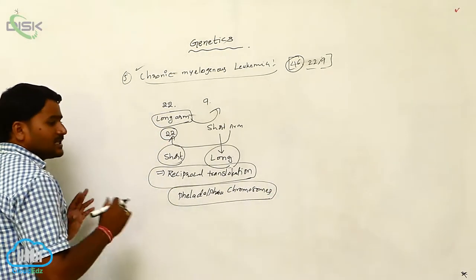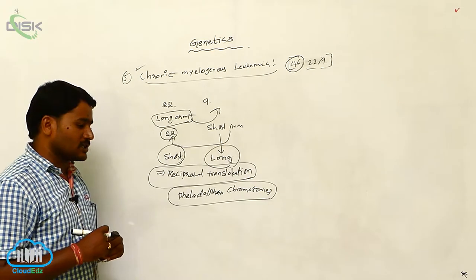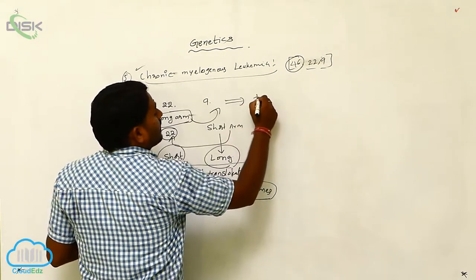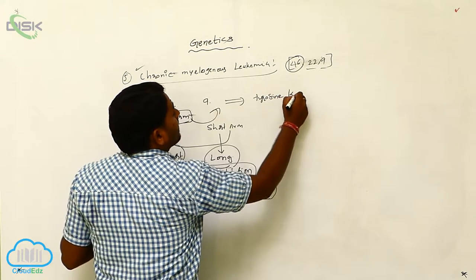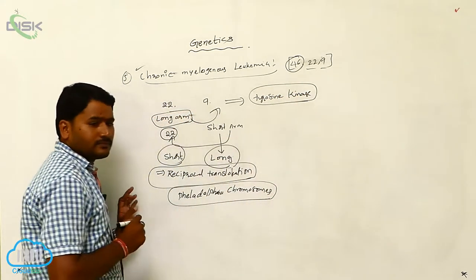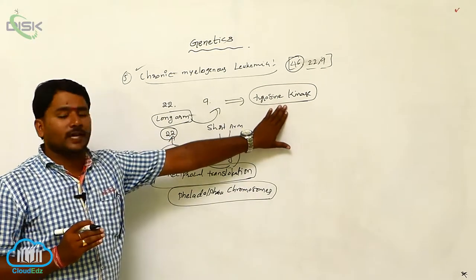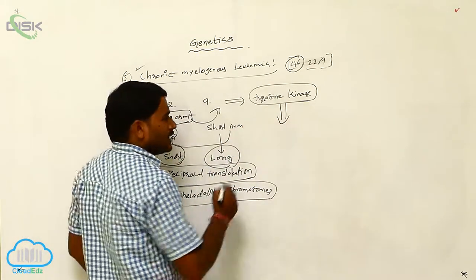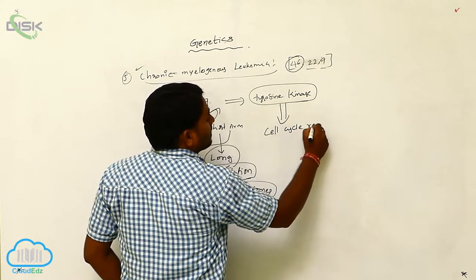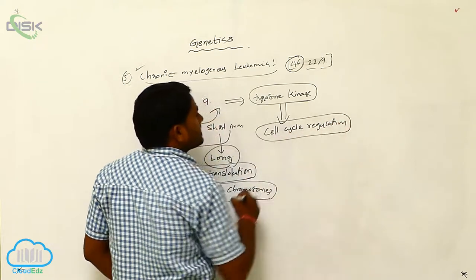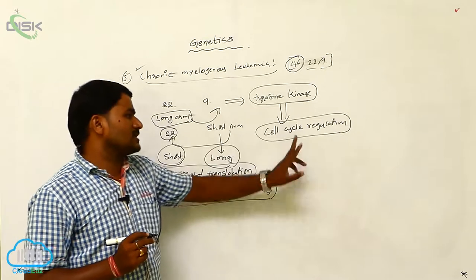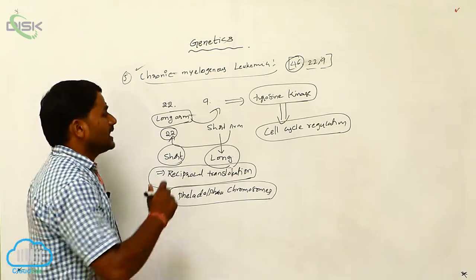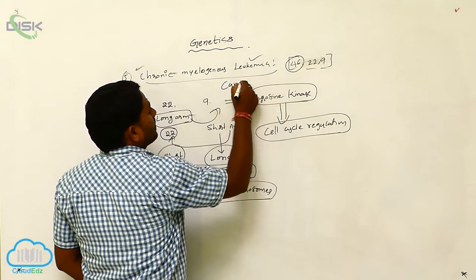When this kind of mutual exchange or reciprocal translocation is taking place, it leads to the damage of the tyrosine kinase enzyme. There is no production of tyrosine kinase enzyme. This absence of tyrosine kinase enzyme leads to the lack of cell cycle regulation. Tyrosine kinase is an enzyme which regulates the cell cycle. When the cell cycle is not regulated and continuous cell division takes place, it leads to leukemia, which means cancer.